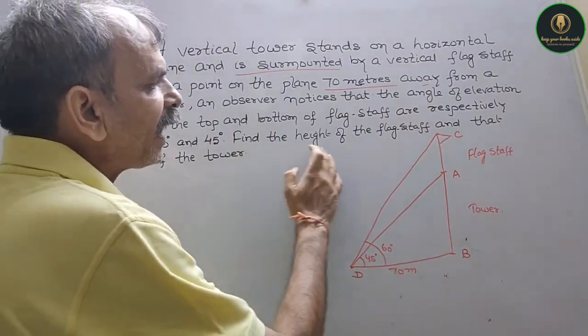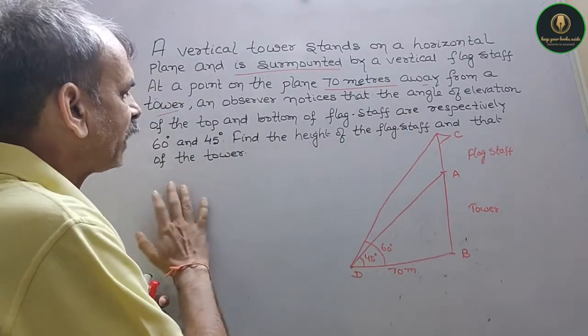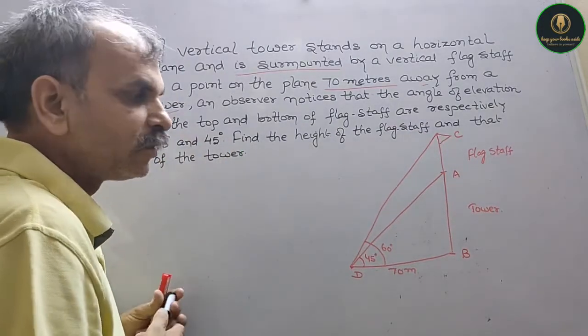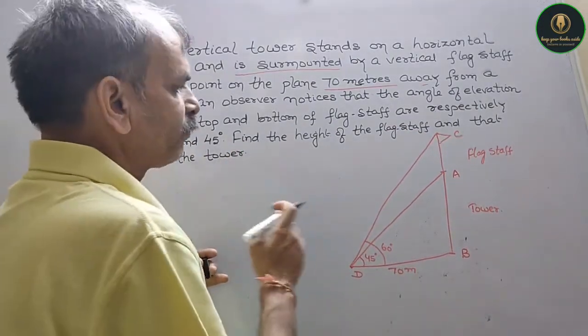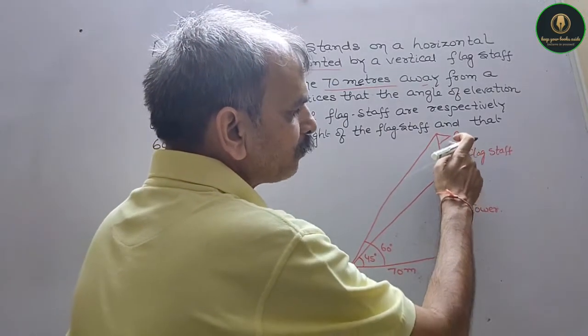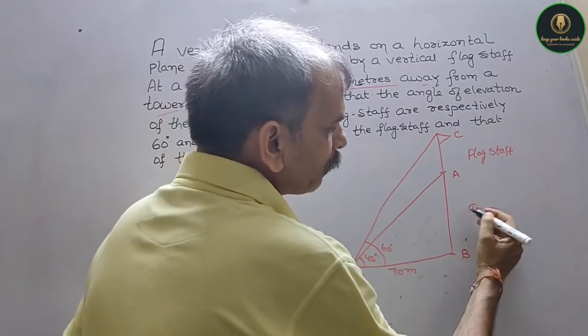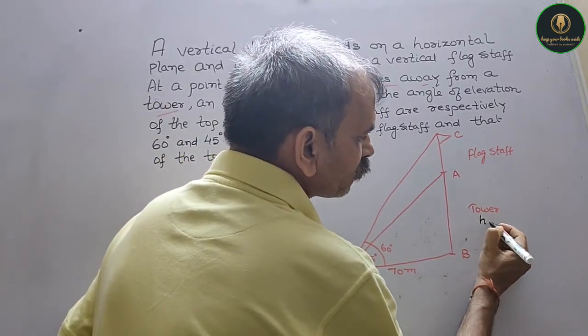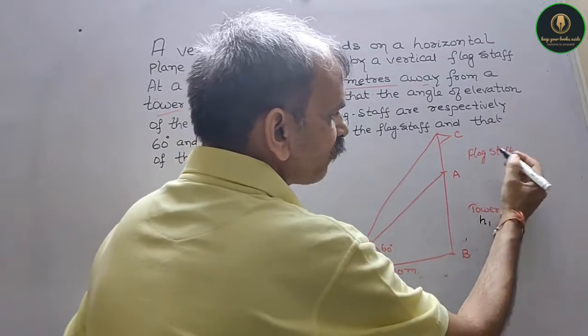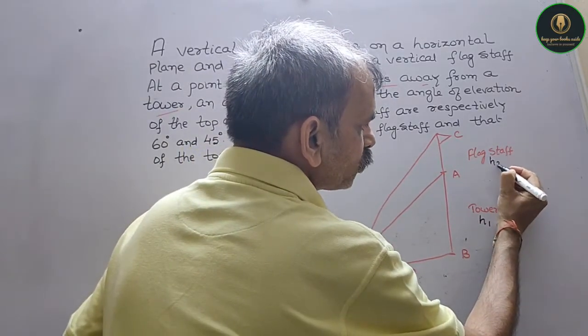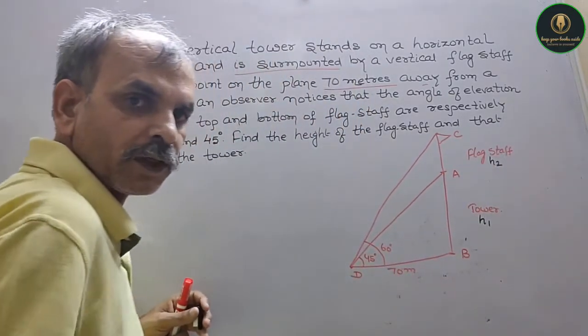It says find the height of the flagstaff and that of the tower. So you have to find this height and this height. So suppose we take the tower as h1 and the flagstaff we take as h2.